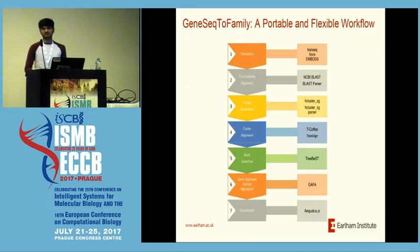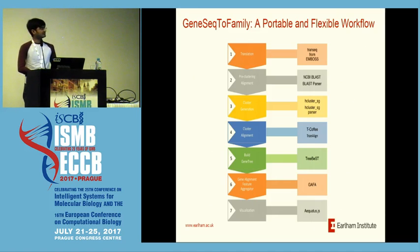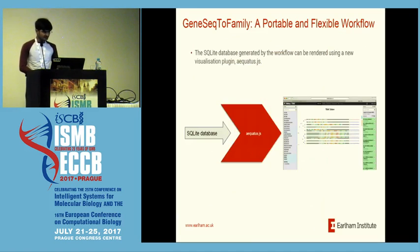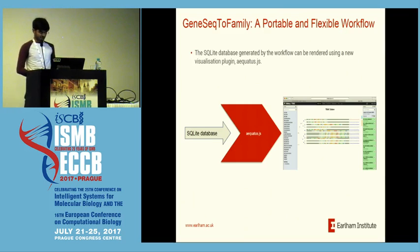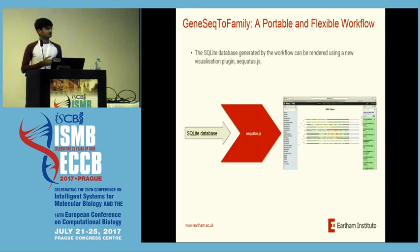At the end you have gene families, but there is no point if you can't find out what's inside them. So we have a visualization tool called Equitas.js. You can easily use the SQLite database from step six, and Equitas is configured to work within Galaxy, so you don't need to go outside or use any additional configuration.